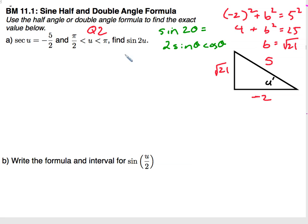Now what we are going to do to find the sine of 2u, we are going to use the double angle formula. So the sine of 2u will equal 2 times the sine of u times the cosine of u.